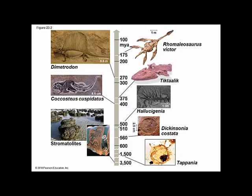Cocostius cuspidatus is a placoderm — a fish-like vertebrate from the Devonian period — with a bony shield protecting its front end. Tiktaalik, about 375 million years ago, is the primitive ancestor of all tetrapods. These fish started to develop limbs and began to live in shallow water areas. Tiktaalik is almost a fish and an amphibian together, with robust limbs used to crawl in shallow waters, and most probably gave rise to all four-limbed vertebrates — from frogs to humans.